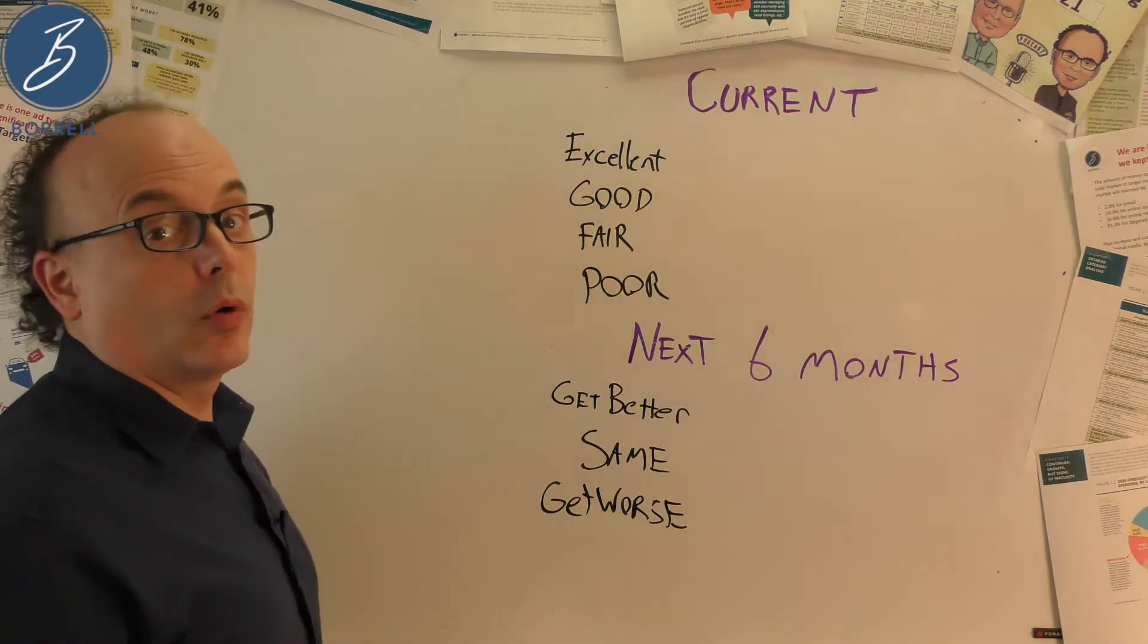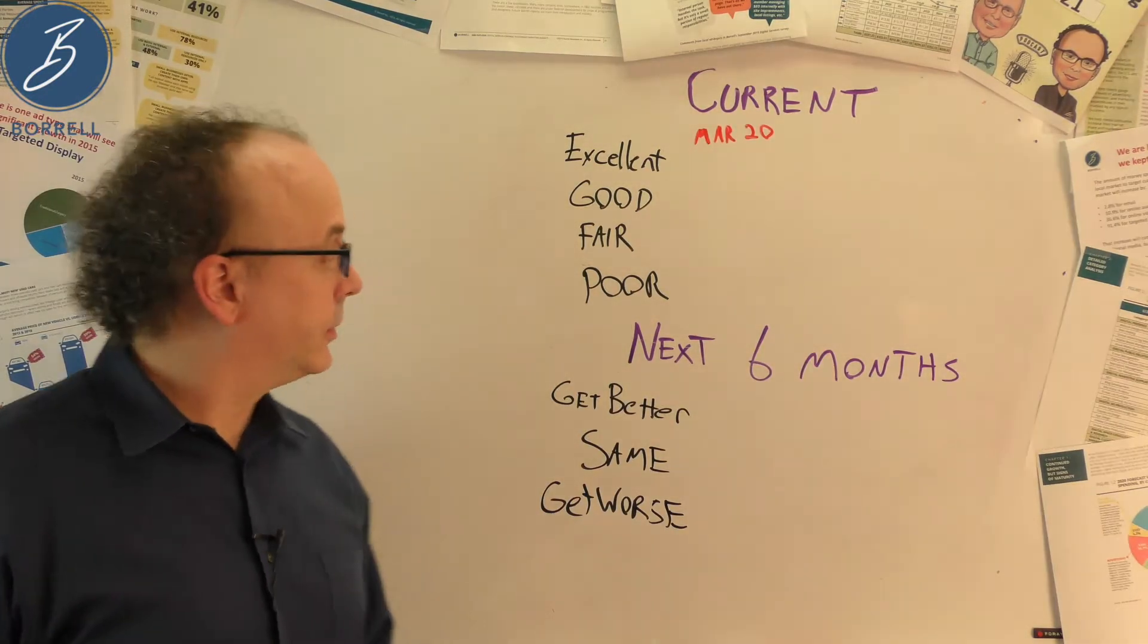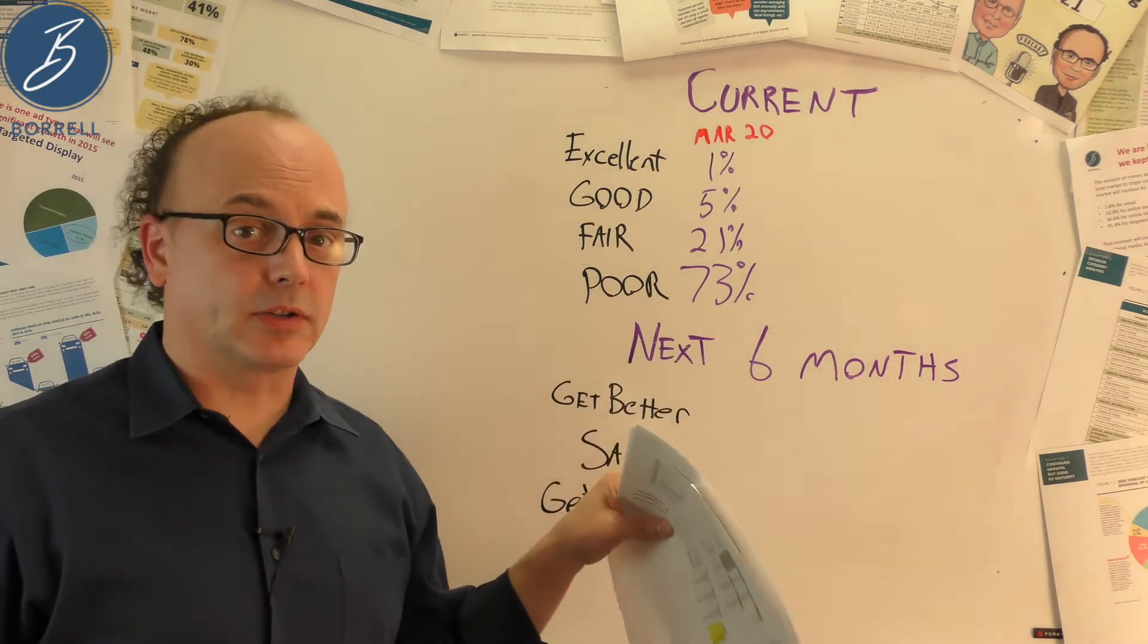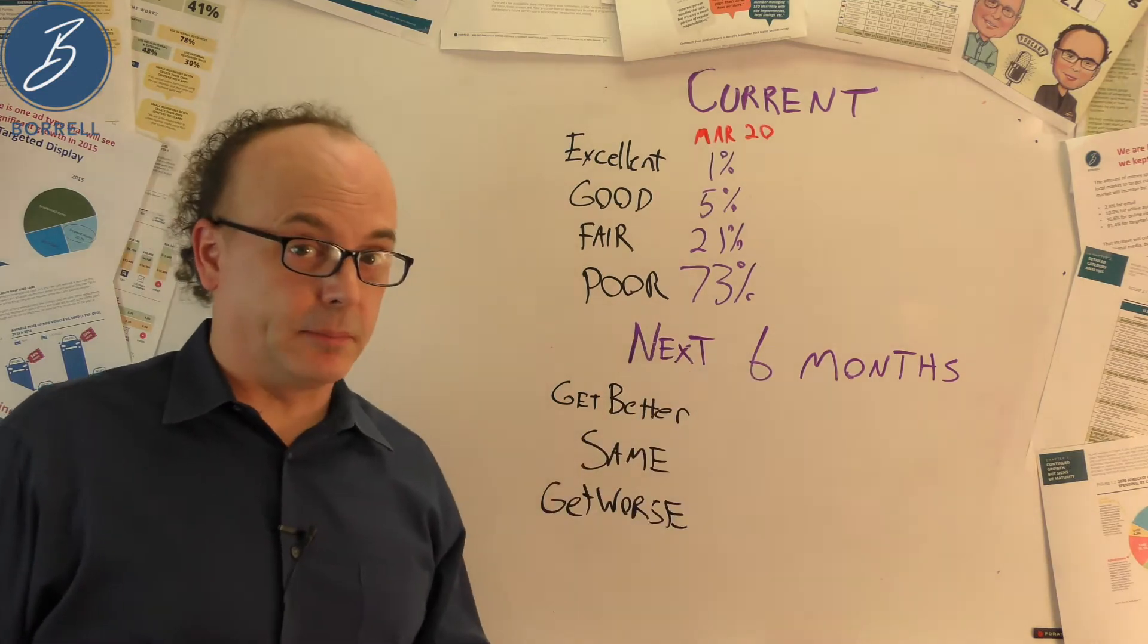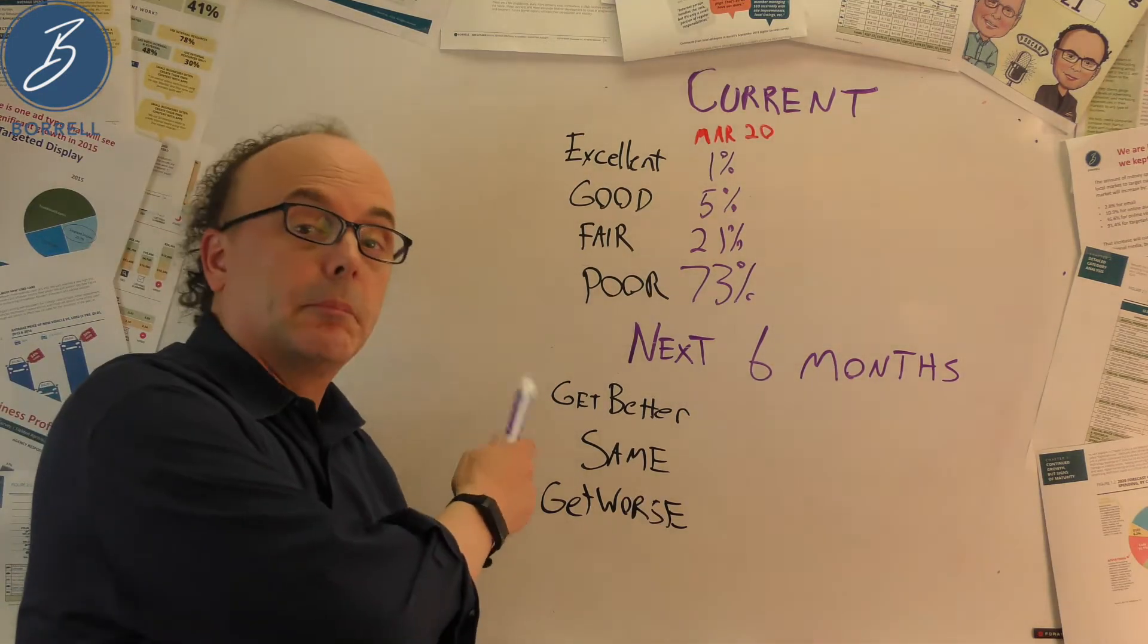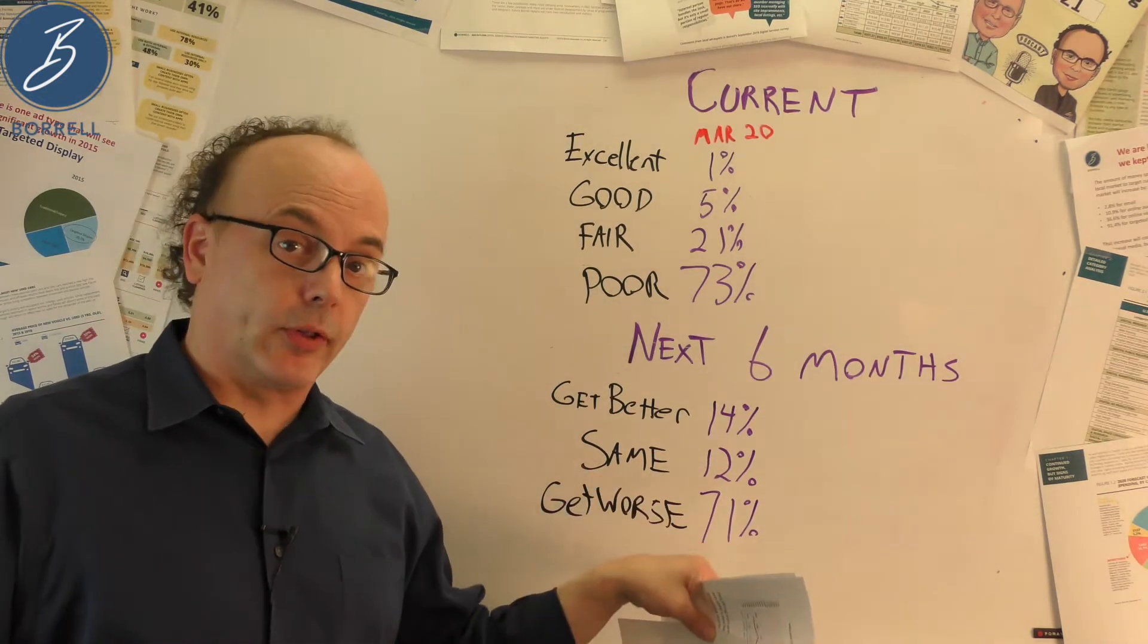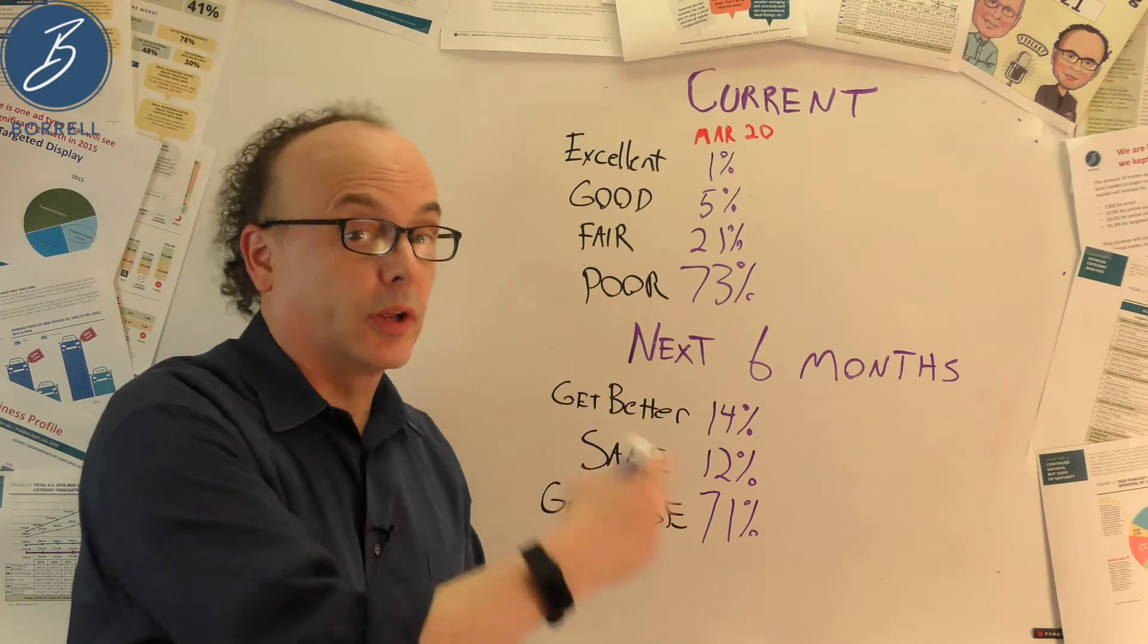Let's go back in time to good old March 2020. Not a really great time. As you'd expect, 73% of SMBs agreed that it was a poor economic condition back in March 2020 to sustain a small business. Obviously, things were pretty grim back then. And we ask them to think about the next six months. So March till whenever, May, June, July. The next six months, are things going to get better, are they going to stay the same, or are they going to get worse? 71% said they're going to get worse in the next six months. 73% said it's poor now. 71% said it's going to get worse.